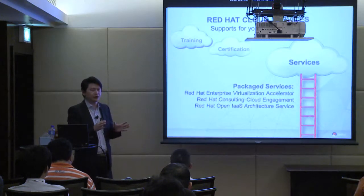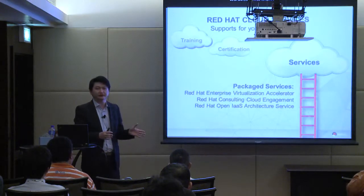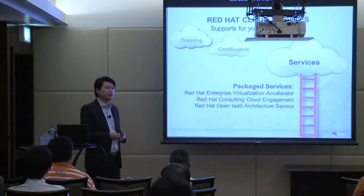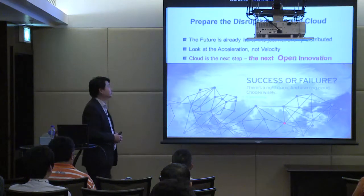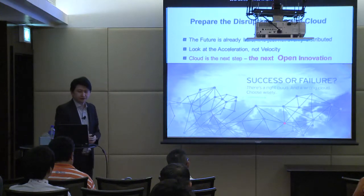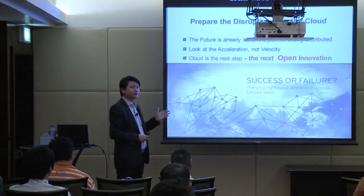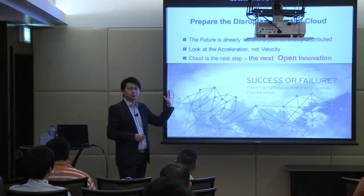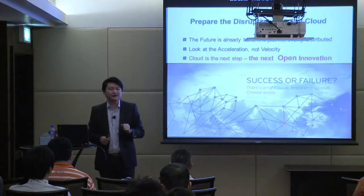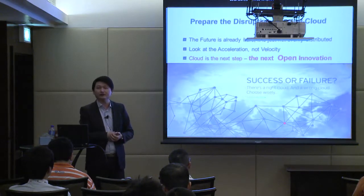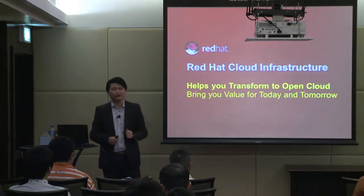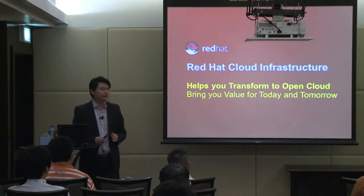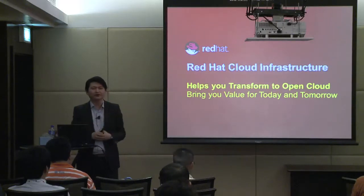Based on Red Hat's objective, we are trying to bring open innovation to the enterprise more easily and efficiently. The future is already here — it's just not evenly distributed. Cloud is the next open innovation you need to focus on. Remember to choose wisely and think about who can support you for your whole cloud journey. The conclusion is how Red Hat Cloud Infrastructure can help you transform to the open cloud to bring you value for today and tomorrow. This is all my presentation — thank you.